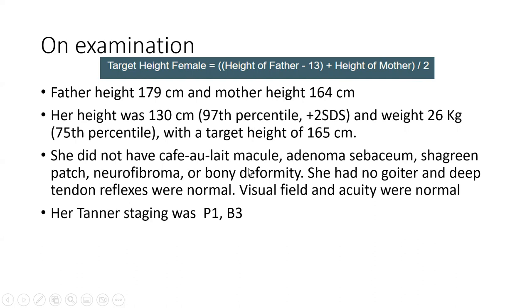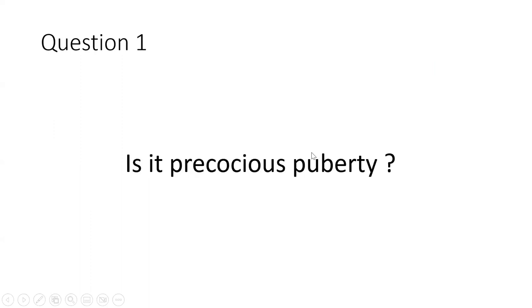She had no café-au-lait macules, adenoma sebaceum, shagreen patch, neurofibroma, or bony deformity — ruling out McCune-Albright syndrome. No goiter and normal deep tendon reflexes, ruling out hypothyroidism. Normal visual fields and acuity ruled out central causes. Her Tanner staging was P1 and B3, so let's now review what Tanner staging — the sexual maturity rating — means.